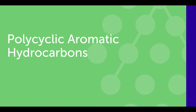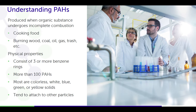Polycyclic aromatic hydrocarbons, or PAHs, also known as polynuclear aromatic hydrocarbons, are produced when organic materials undergo incomplete combustion. You find these in cooking food, burning wood, coal, oil, gas, trash, any sort of combustion, cigarettes.